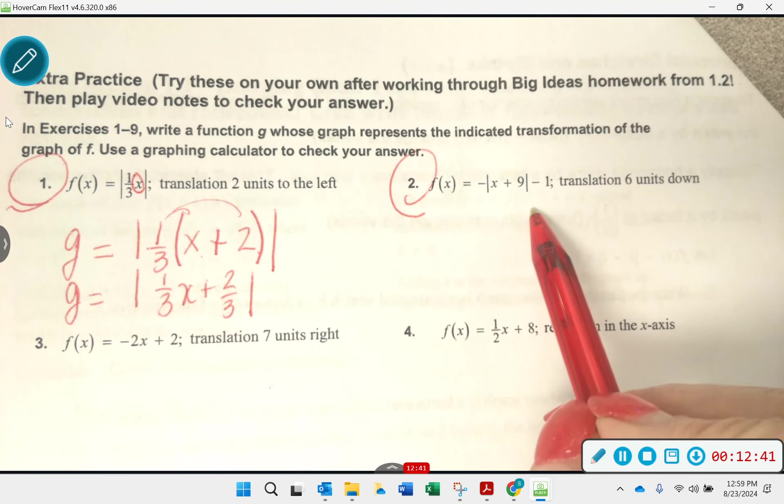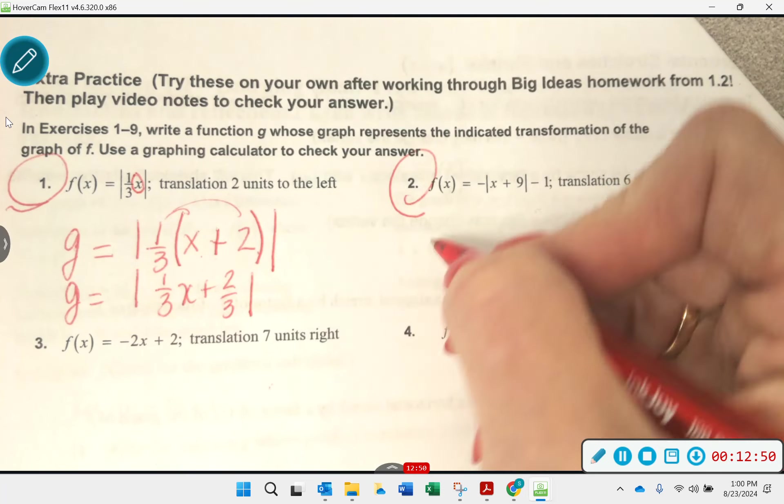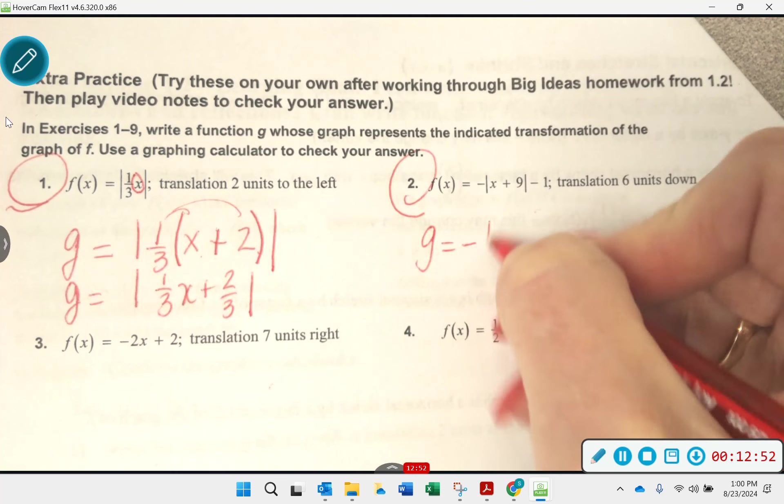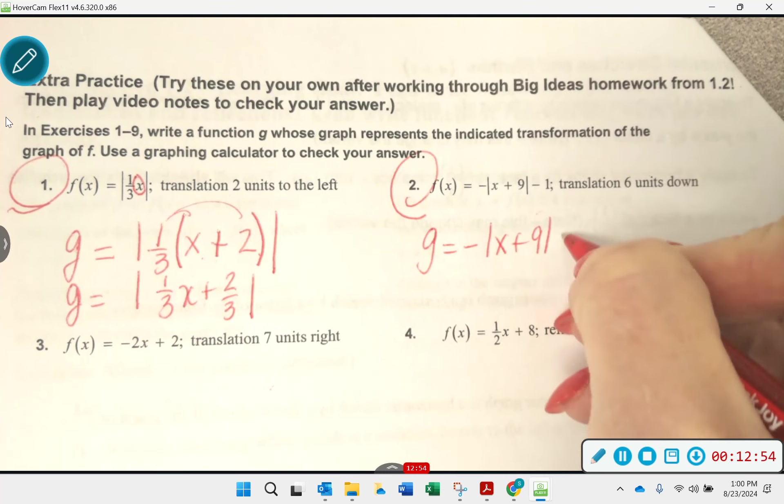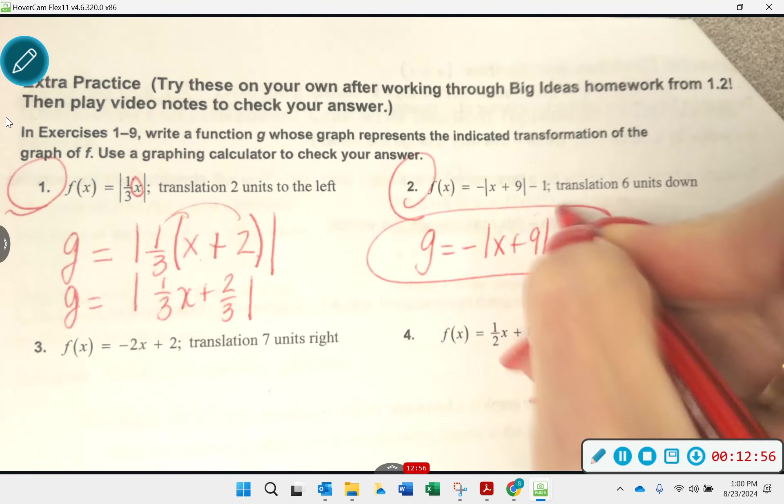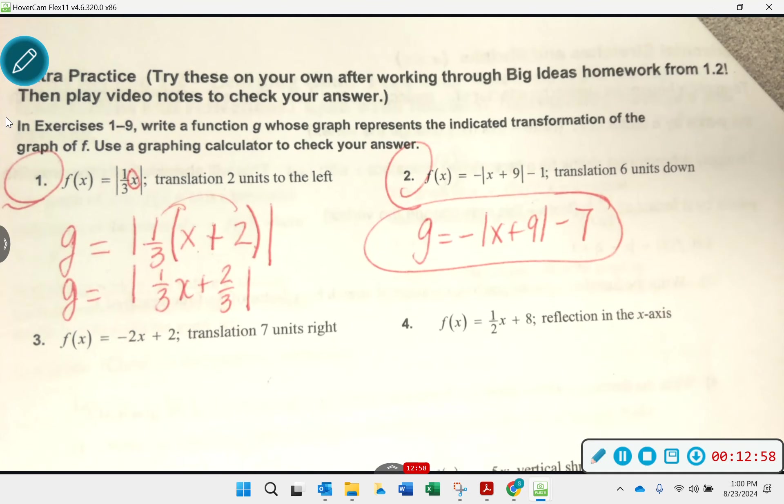What about this one? Six units down. This isn't as difficult. What do we do to go six units down? Subtract six. Yes. So this is what you should have here. Did some of you get that right? Okay.